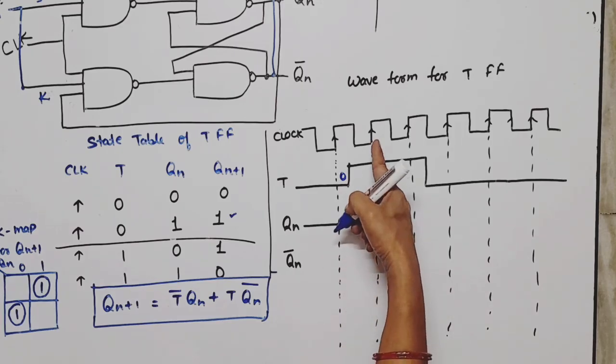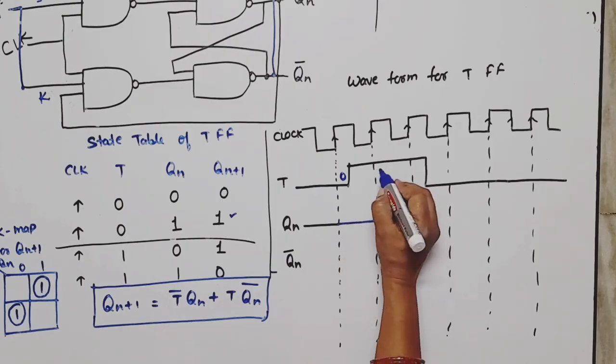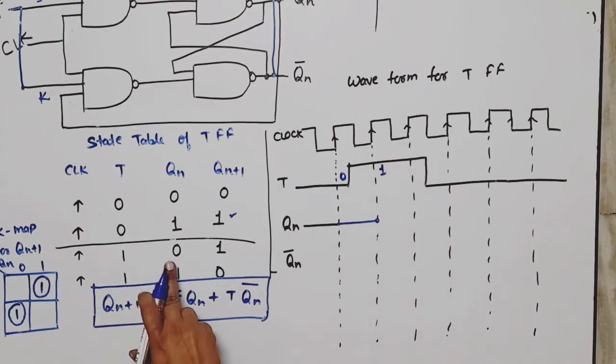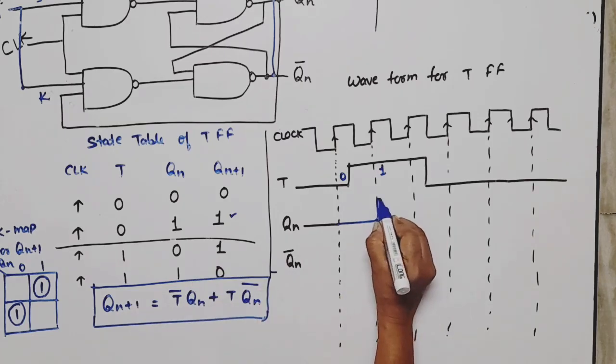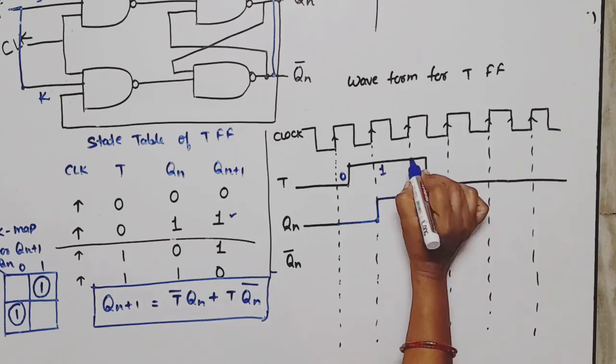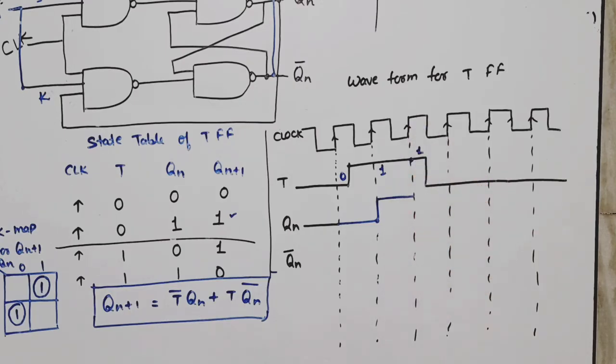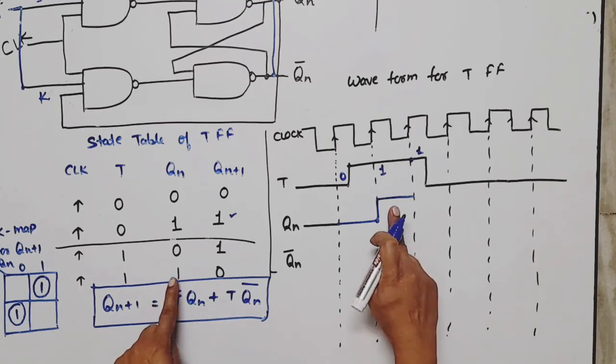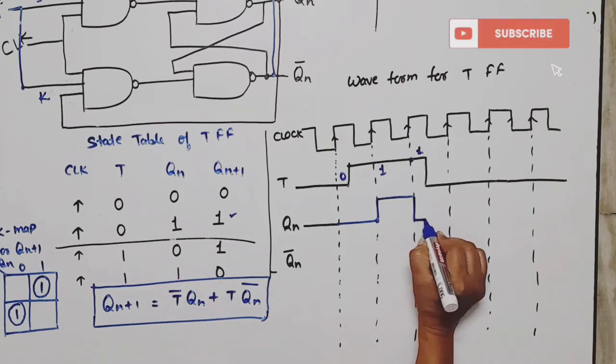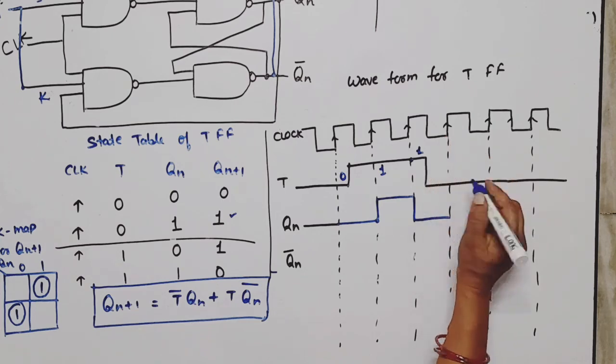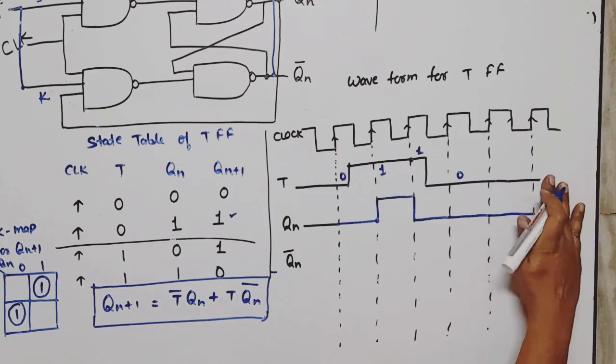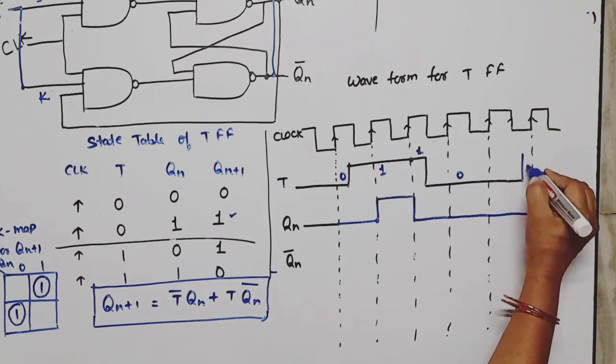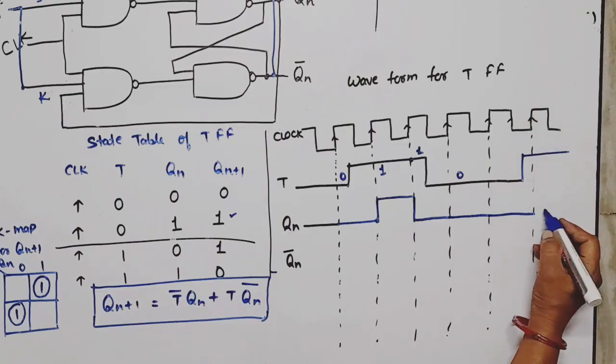Next, the clock goes high and T's value is one. In the one case, if present state is zero, next state will be high. It will change from zero to one for one clock pulse. At this point, a new clock pulse starts, again T is one, meaning it will change its state. Present state is one, so next state will be zero. Next clock pulse - here at the positive edge, T's value is zero, meaning no change. T value is zero, meaning no change. Meanwhile, at this positive edge, QN value becomes one.